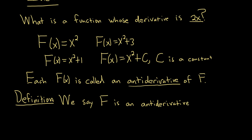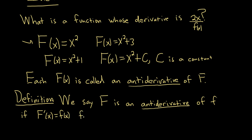So we say big F is an antiderivative of little f if, when you take the derivative of big F, you get little f — that's precisely what we have in our example above. Little f could be our 2x. So the derivative of big F equals little f, and this must be true for all x in some interval I.